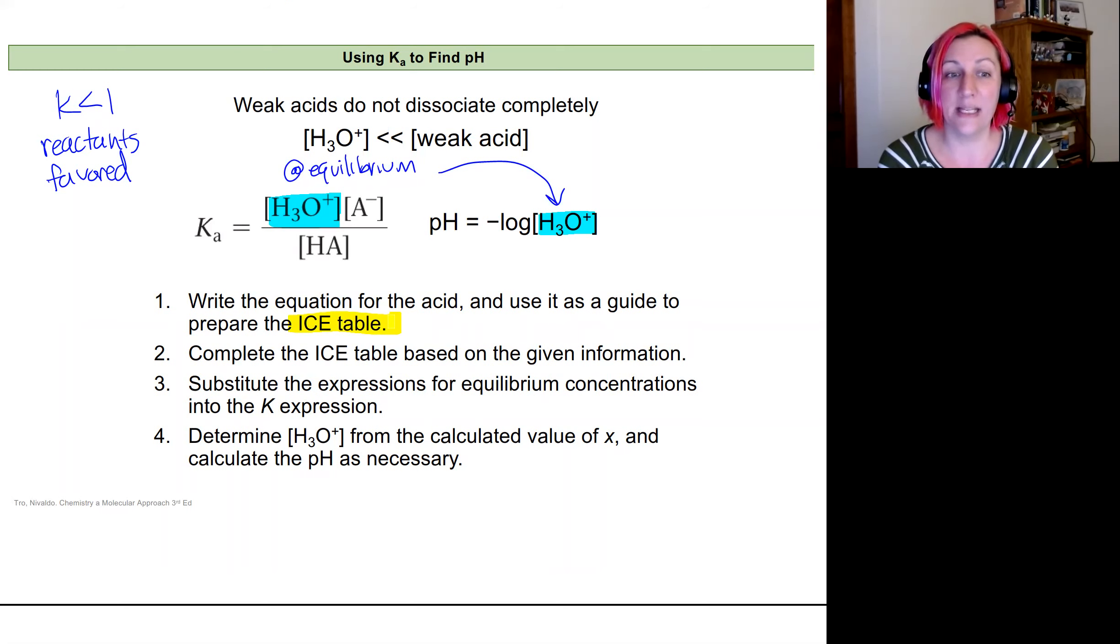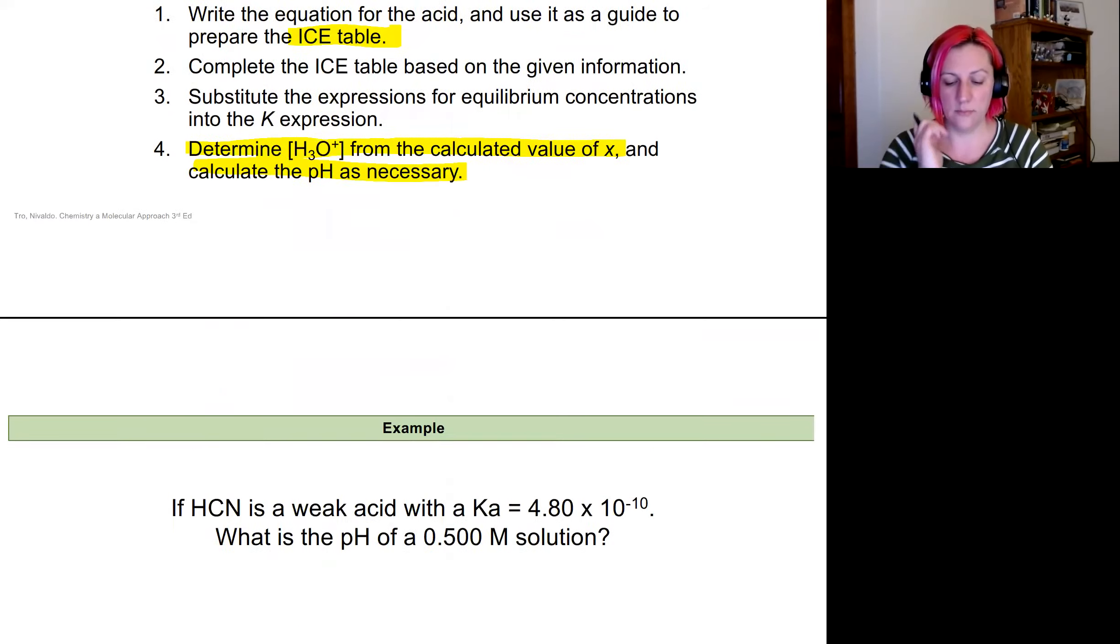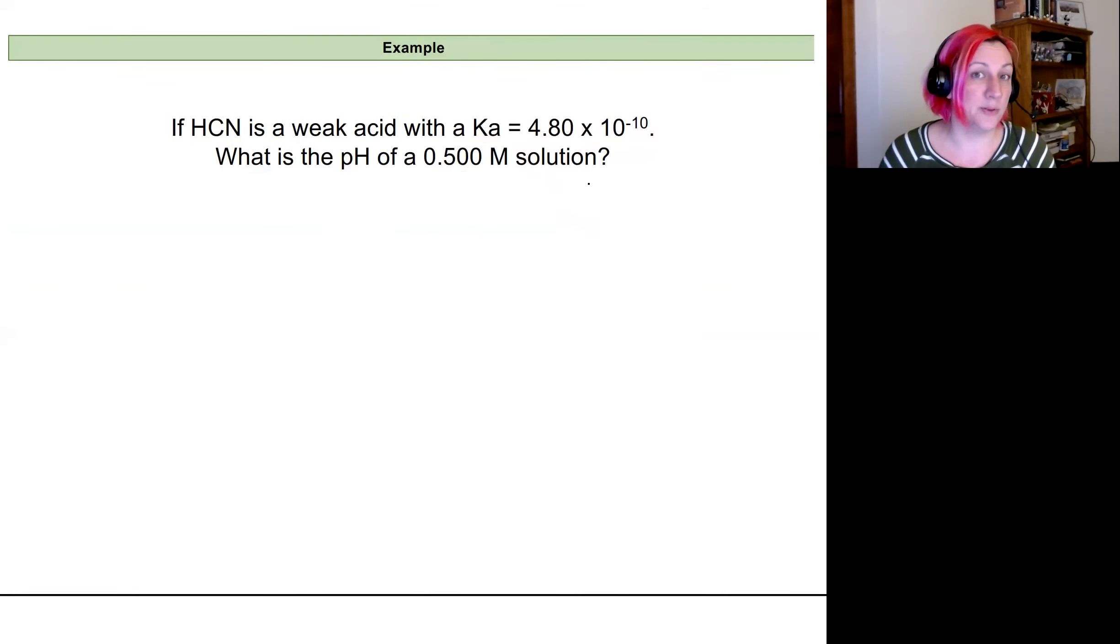And so this means that to solve any problems for this, we're going to follow these four steps here. We're going to write out the equation for our acid and prepare an ice table. We'll complete it with the given information. We'll be able to substitute the expression for our acid dissociation constant with those equilibrium concentrations. And then we'll determine that concentration of H3O plus from the calculated value of X. And then from there, we'll be able to calculate the pH. And so we'll be using these two equations right here to do this, along with an ice table.